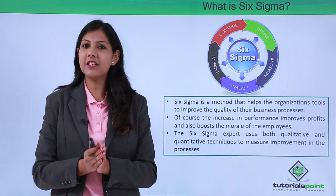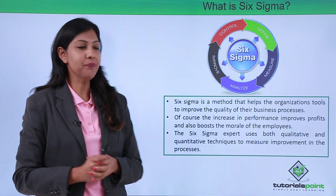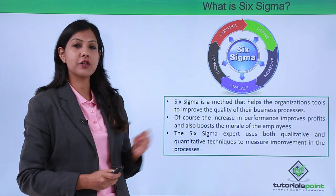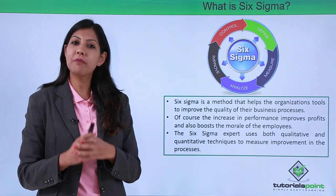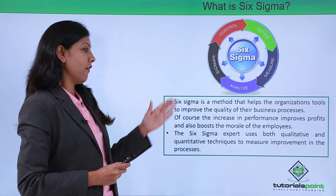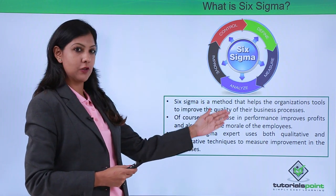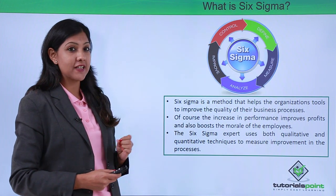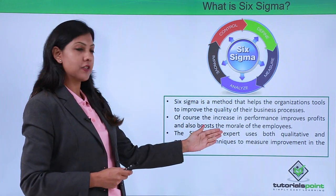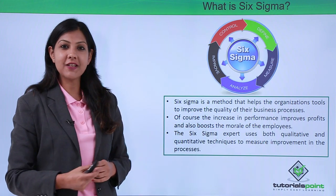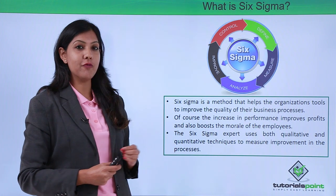What exactly is the definition of Six Sigma? Well, it is a method or a tool which is used by many organizations all over the world in order to improve their business processes. Improving business processes also improves performance and affects the profits of the company. Six Sigma experts use both qualitative and quantitative techniques in order to measure the improvement in the processes.